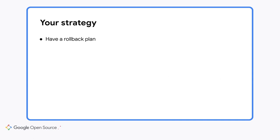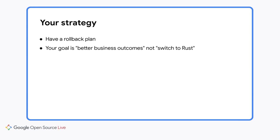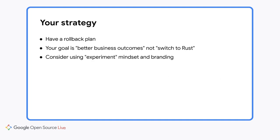A rollback plan also emphasizes that your goal is not to make your team write Rust. Wait — the goal is not to switch to Rust? That's right. The goal is to achieve better business outcomes for the company — for example, reduce maintenance costs, improve reliability, or create a better working environment for the team. You should be open to the idea that Rust might not work out for the project, at least with your initial attempt. You could explicitly approach Rust adoption as an experiment.